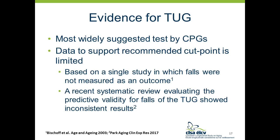The timed up-and-go is the most widely suggested test and the only test endorsed by all three clinical practice guidelines. However, the recommended cutoff point of 12 seconds is based on a single study that looked at TUG scores to distinguish community-dwelling older adults from those who are institutionalized. This 12-second cutoff has since been validated for predicting falls, but studies have been inconsistent. A recent systematic review evaluating the predictive validity for falls of the TUG found inconsistent results across studies, and most studies were limited by small sample sizes.